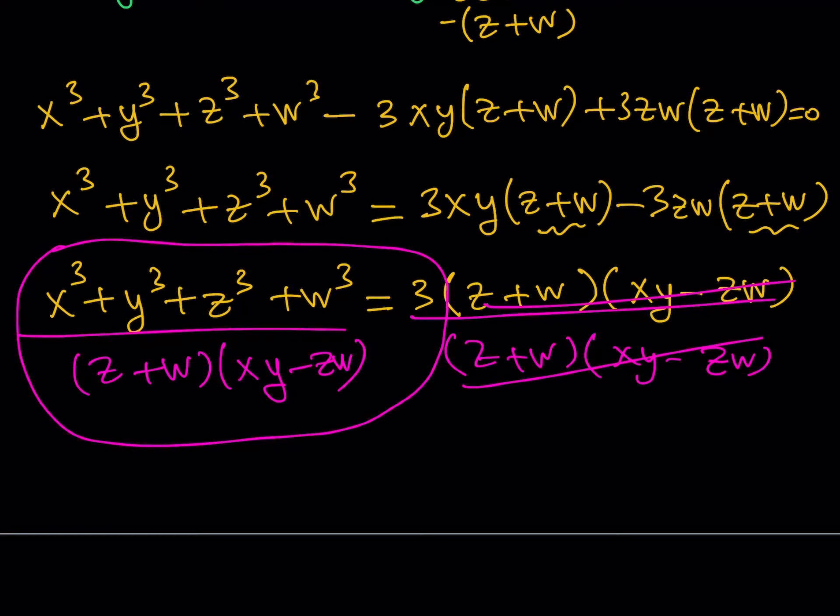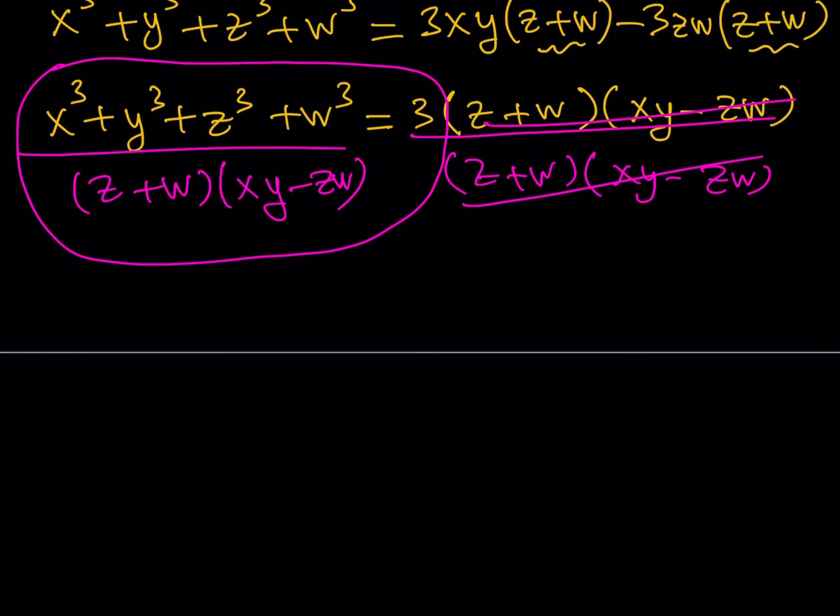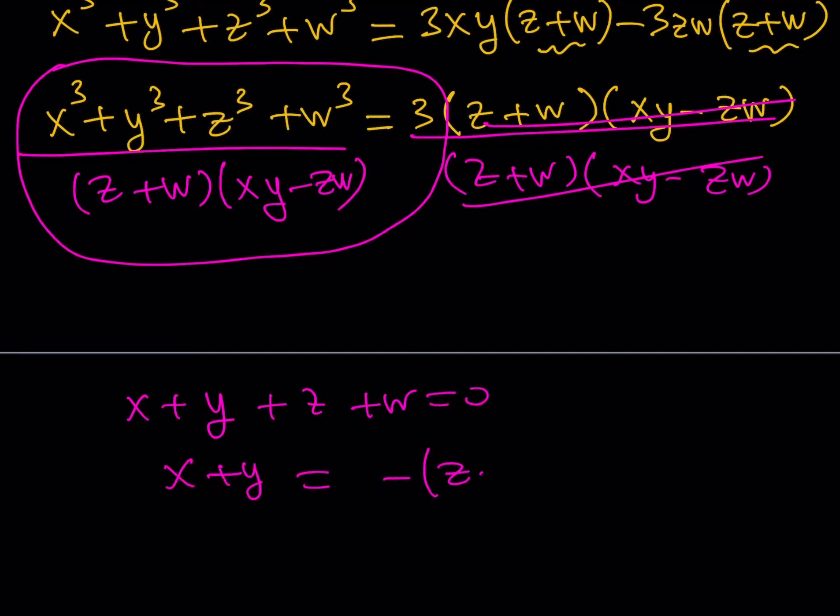The second method is kind of like the first method. Remember what I told you at the beginning? Instead of cubing the whole thing, we can isolate x plus y, then cube both sides. You could also proceed like this, and you'll pretty much get the same thing. I'm not going to go all the way to the end because this is straightforward.